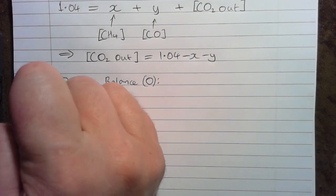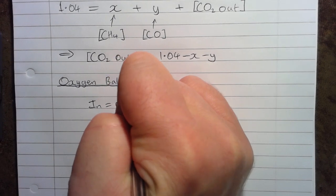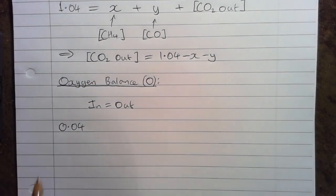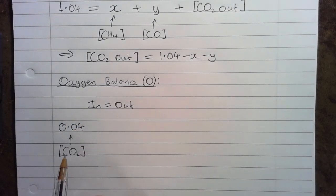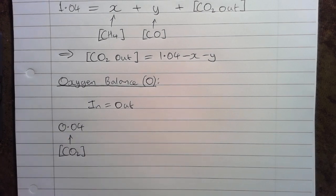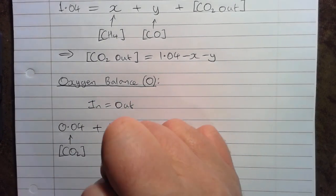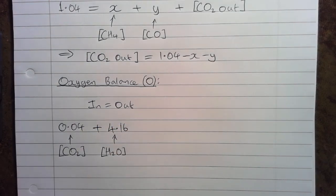Next we're going to do an oxygen balance. Again, what goes in must come out, so in equals out. We have 0.04 kmol of oxygen atoms going in from the CO₂ — we only have 0.02 kmol of CO₂ going in, but there are two oxygen atoms per molecule — plus 4.16 kmol of oxygen atoms going in from the water. That's all the oxygen going into the system.